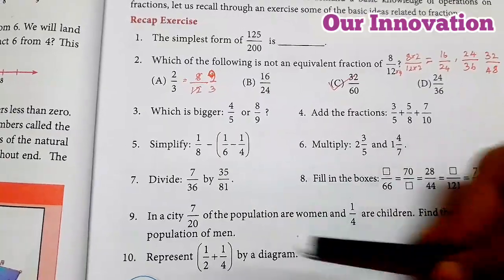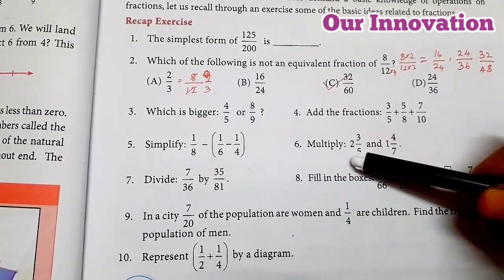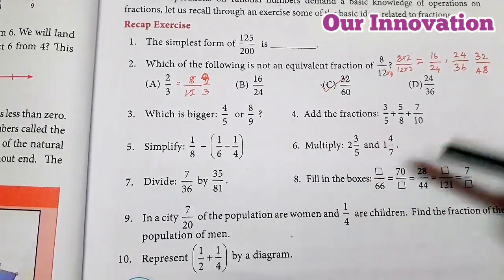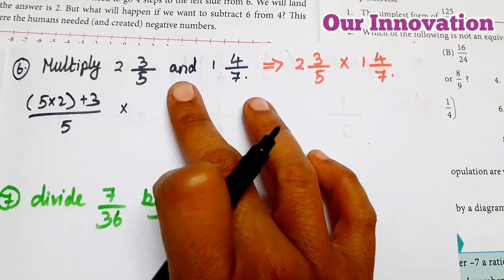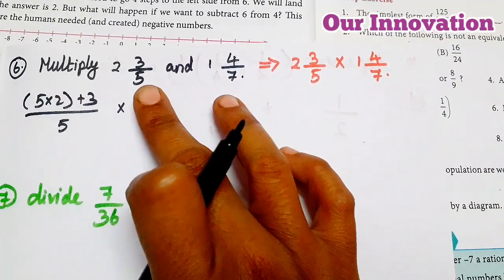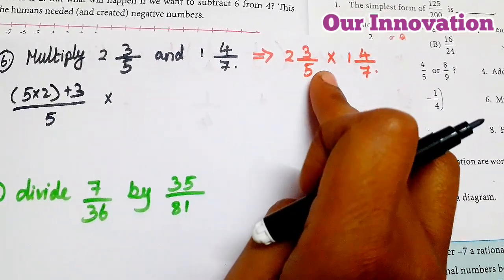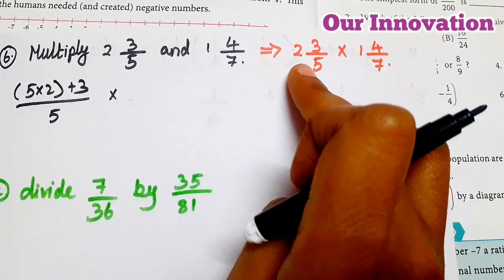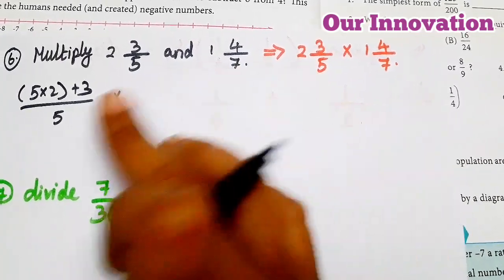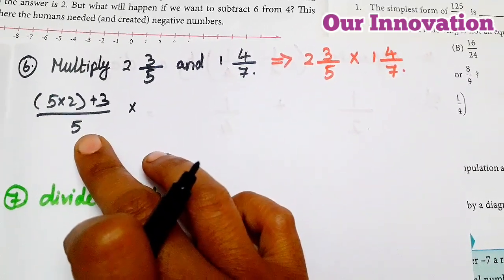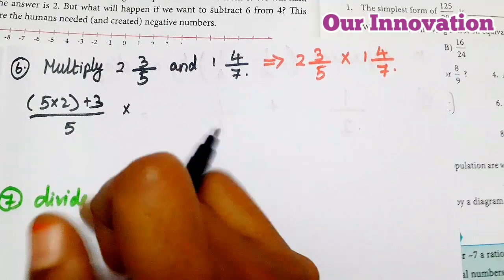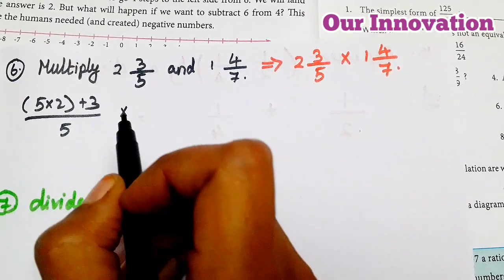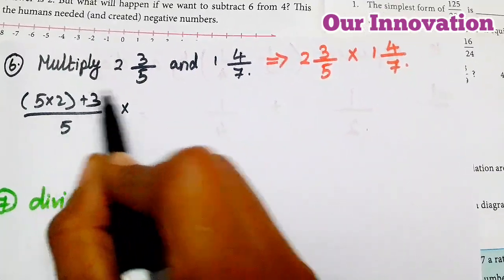So recap exercise: multiply 2 and 3/5 by 1 and 4/7. Students, you can multiply 2 3/5 by 1 4/7. So this is a mixed fraction — we will convert to an improper fraction. An improper fraction: the numerator is big and the denominator is small.